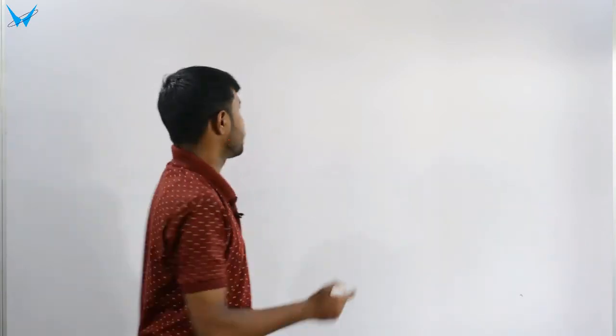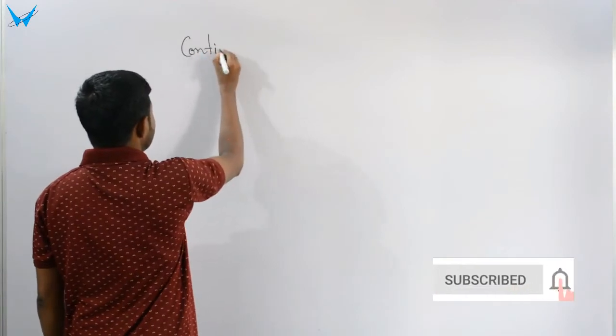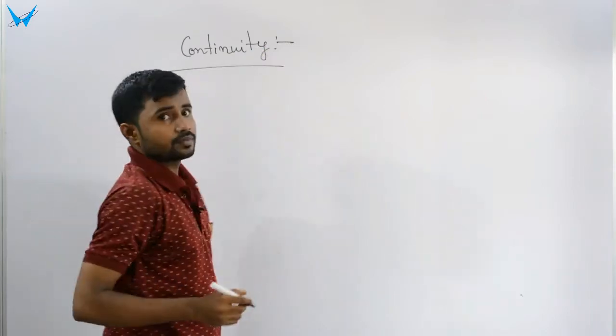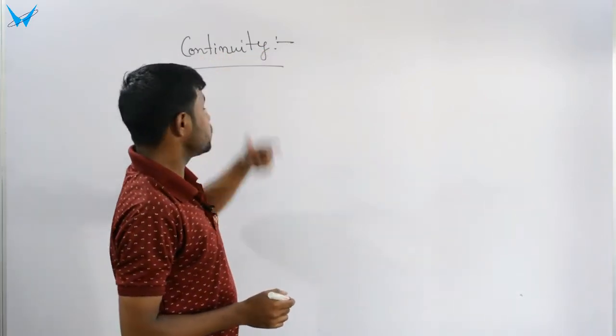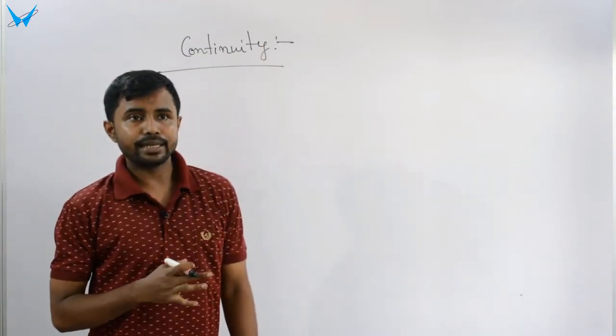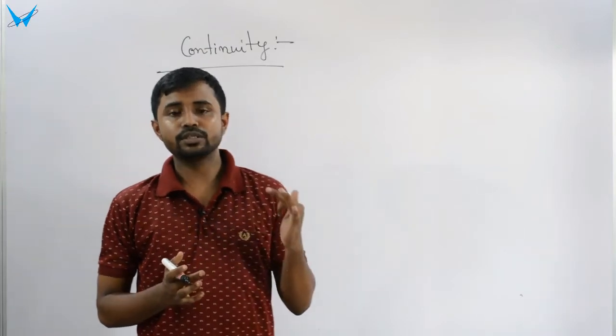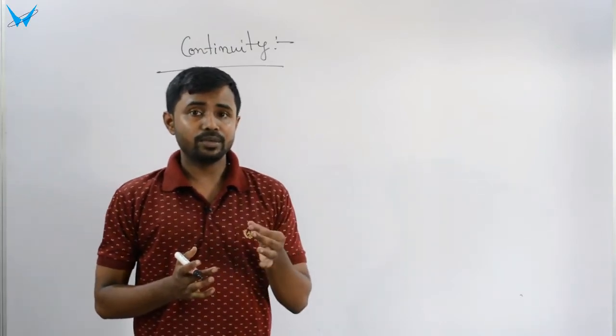I will discuss continuity and differentiability. My number is 5. First part is continuity. Continuity means the curve is continuous — it goes in the upward direction and downward direction. This curve is continuous.